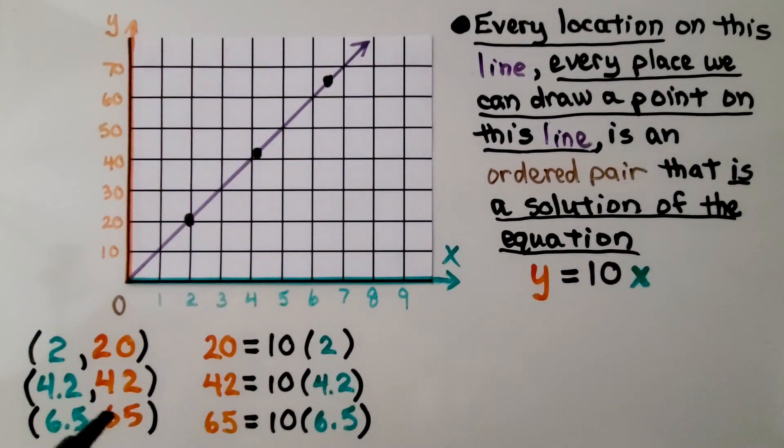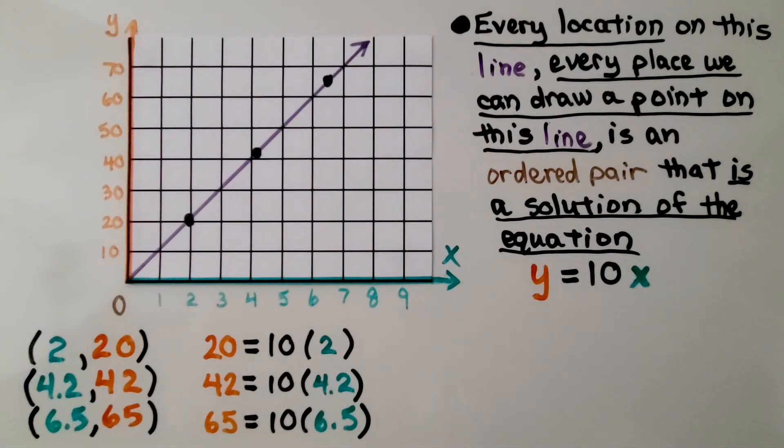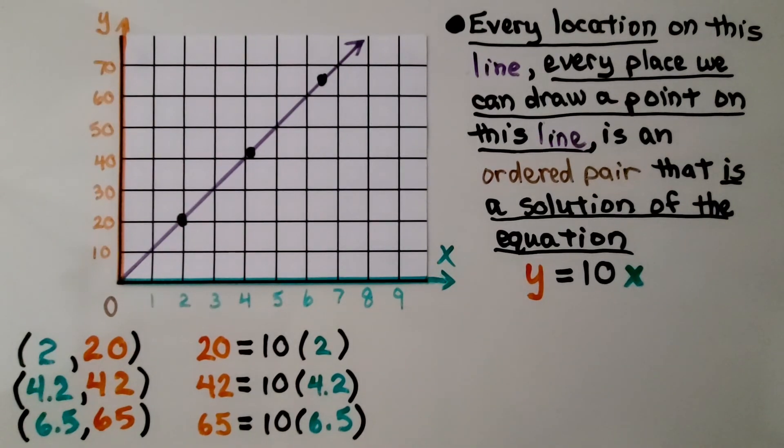It would be a solution if it's a point on the line from the ordered pairs. And we'll discuss this more throughout the rest of this lesson.